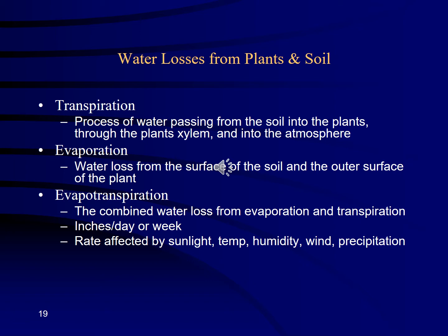Transpiration is the evaporation of water from inside the plant — from the xylem, up through the roots, to the stomata (pores in the leaves), and evaporating out into the atmosphere. That's the loss of water from inside the plant to the outside. Evaporation is water leaving the surface of everywhere else — the surface of the soil, the outer surface of the plant, buildings, structures. Combine both when thinking about your site, and that's evapotranspiration (ET).